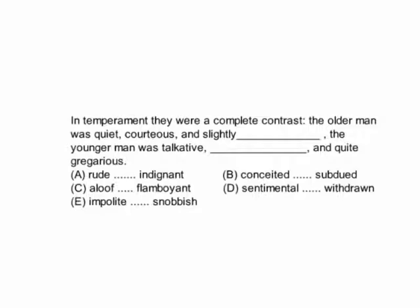Let's look at a couple of examples. This sentence completion would be in the fairly easy section: 'In temperament, they were a complete contrast. The older man was quiet, courteous, and slightly blank. The younger man was talkative, blank, and quite gregarious.' Well, look at what they're saying — they're a contrast, they're different. The older man was quiet and courteous; the younger was talkative and gregarious.